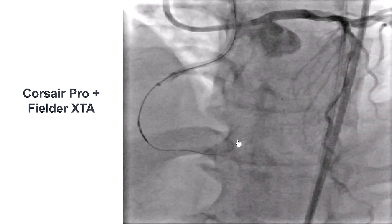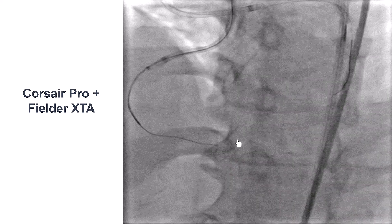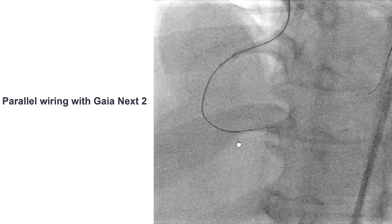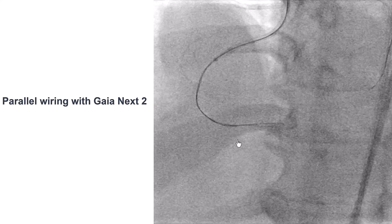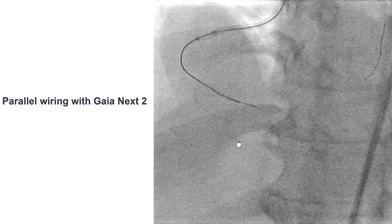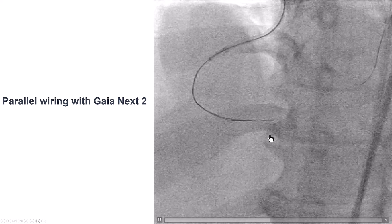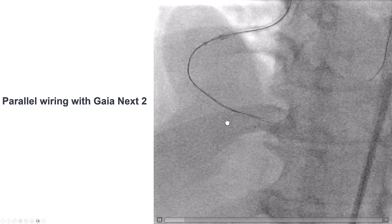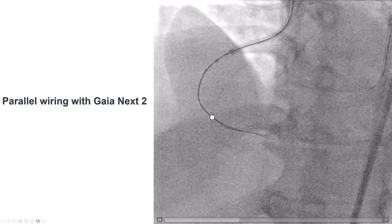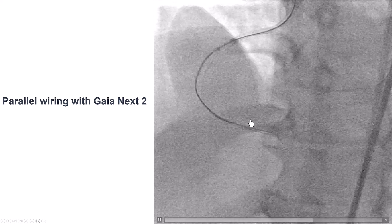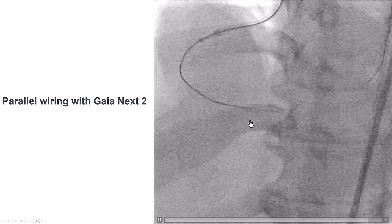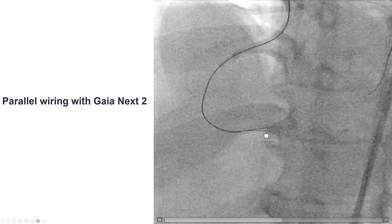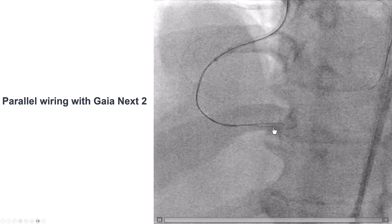It is always good to prepare for a less-than-ideal scenario. The options here are to either do antegrade dissection reentry, use another wire with the parallel wire technique, or pull back the wire and redirect. In this particular case, we decided to leave the Fielder XTA wire in place and then try the parallel wiring technique. This is best performed by putting another microcatheter over the second guide wire and using a more penetrating, torqueable guide wire — such as the Gaia family of wires — to wire in a different plane compared to the original guide wire. The original guide wire serves as a marker of where not to go and guides the direction for the second guide wire.